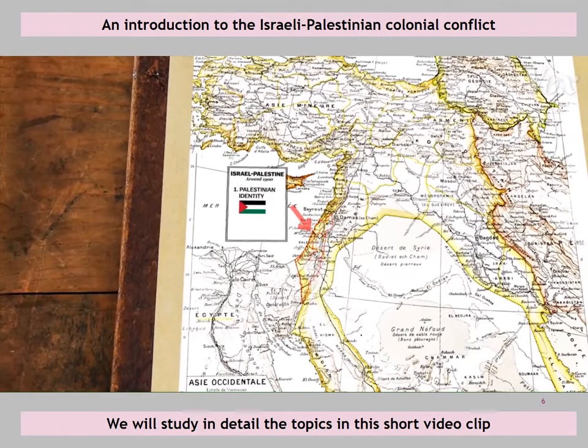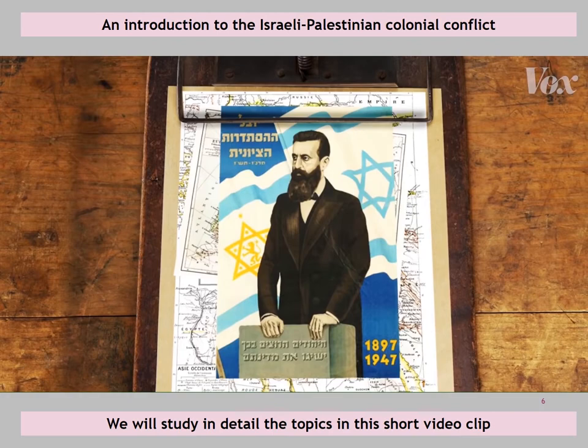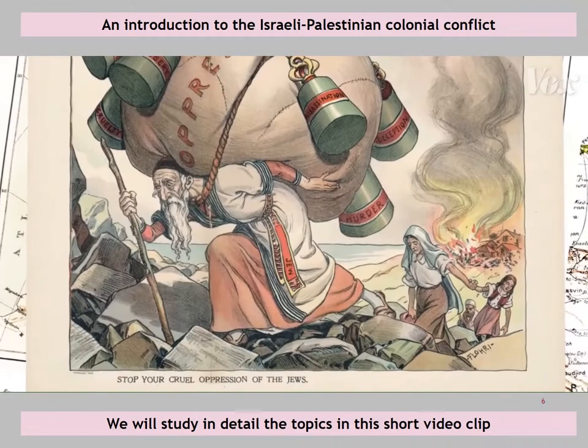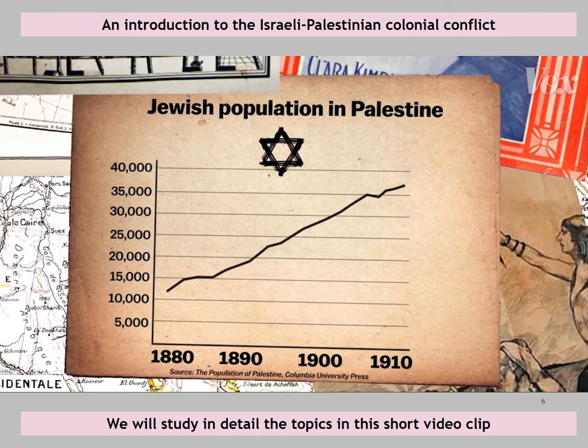It was changing in two important ways. First, more people in the region were developing a sense of being not just ethnic Arabs, but Palestinians — a distinct national identity. At the same time, not so far away in Europe, more Jews were joining a movement called Zionism, which said that Judaism was not just a religion but a nationality, one that deserved a nation of its own. And after centuries of persecution, many believed a Jewish state was their only way to safety and saw their historic homeland in the Middle East as their best hope for establishing it. In the first decades of the 20th century, tens of thousands of European Jews moved there.